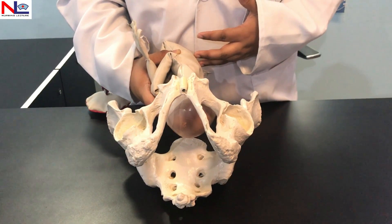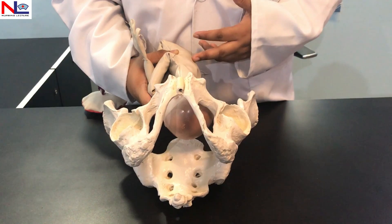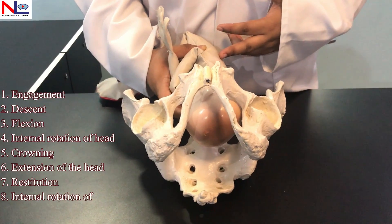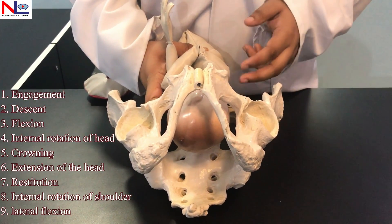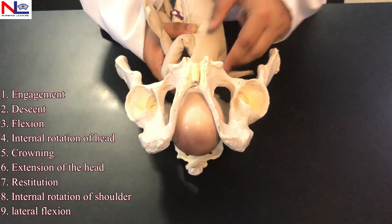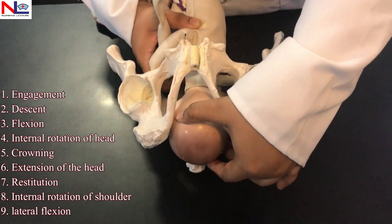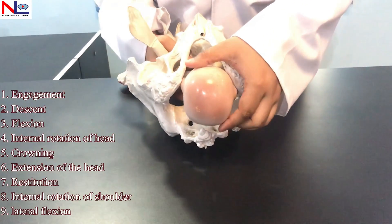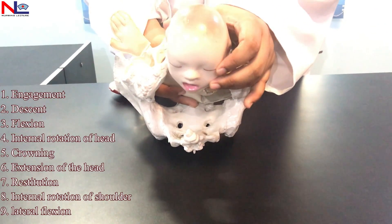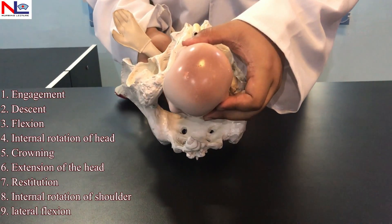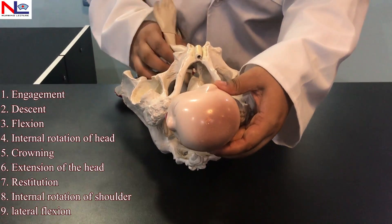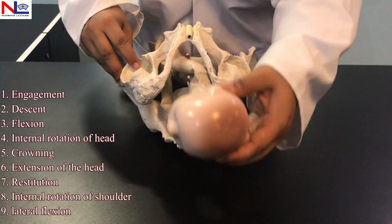To summarize, the nine cardinal movements are: engagement, descent, flexion, internal rotation of the head, crowning, extension of the head, restitution, internal rotation of the shoulder with external rotation of the head, and finally lateral flexion.